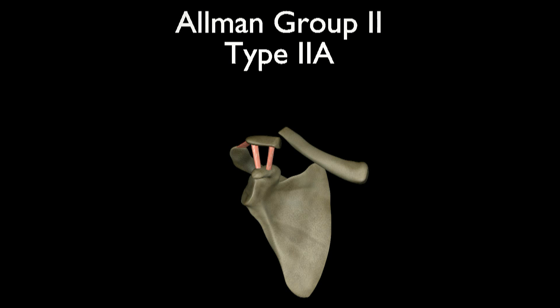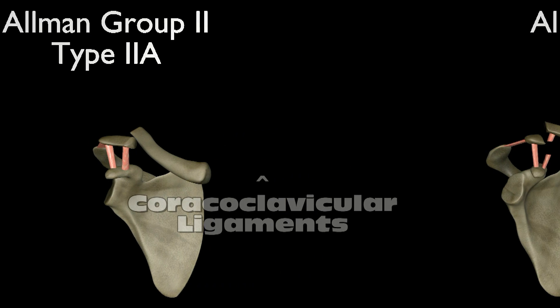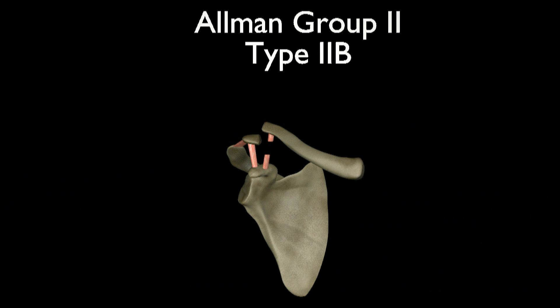Group 2 type 2 fractures occur medial to the coracoclavicular ligaments. Type 2a fractures leave the coracoclavicular ligaments intact, while type 2b fractures result in a tear of the conoid ligament. This sometimes results in forces that pull the fragments apart and make it difficult for the fracture to heal, so group 2 type 2 fractures sometimes need surgical fixation.